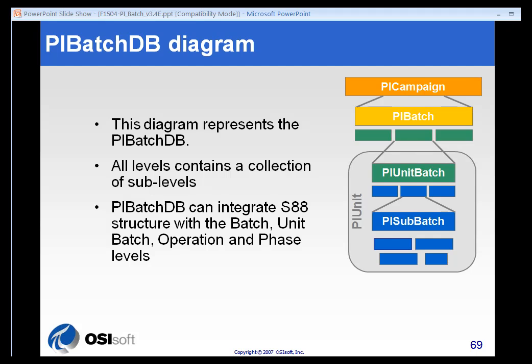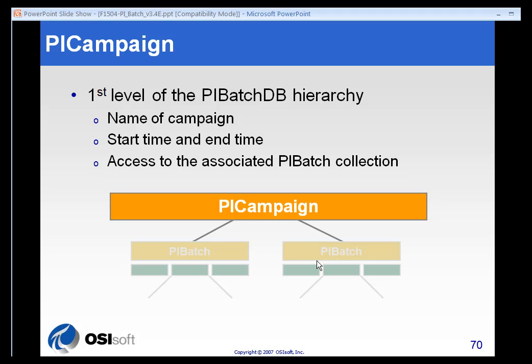This diagram represents the PyBatch database from an architectural or hierarchical standpoint. At the top we have the PyCampaign level. The PyCampaign is made up of one or more PyBatches. A PyBatch is constructed of one or more PyUnit batch structures. The PyUnit batch can be made up of one or more SubBatches, and SubBatches can in turn have other SubBatches. Let's take a look at each one of these in sequence.